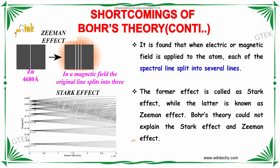Regarding the Zeeman effect: in a magnetic field, the original spectral line splits into three. It is found that when an electric or magnetic field is applied to the atom, each of the spectral lines splits into several lines. The splitting due to an electric field is referred to as the Stark effect, and the splitting due to a magnetic field is referred to as the Zeeman effect. Bohr's theory could not explain both the Zeeman and Stark effects.